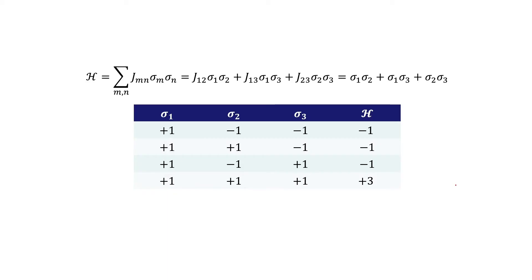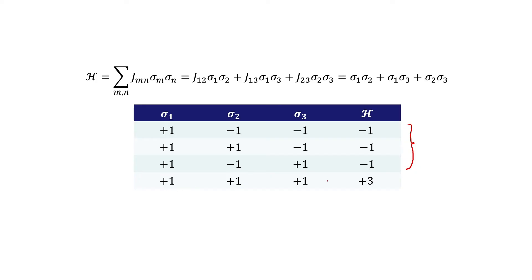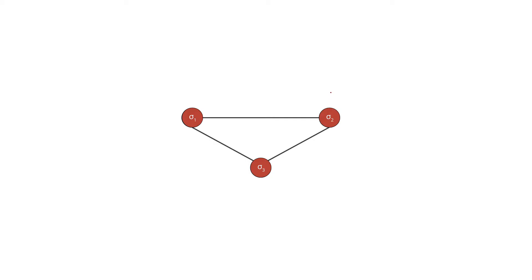I'd like to take a look at the Hamiltonian for this three-cell graph partitioning problem. If we assign plus one to all of the J's, there are four different outcomes for the Hamiltonian from different partitions. The first three rows correspond to the three correct solutions - they're equally correct because they cut through the same number of edges. The last solution is wrong because the Hamiltonian is not minimized, and Sigma-1, Sigma-2, and Sigma-3 would all be positive one, lying on the same side of the partition.